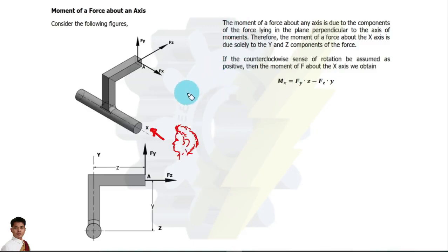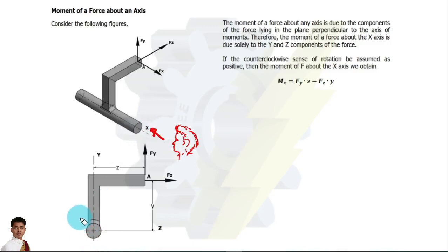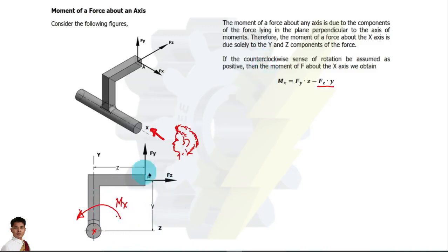Next subtopic: moment of force about an axis. The most basic thing to remember is where to place your line of sight. For example, if we are finding the moment about the x axis, we place our line of sight along the x axis and view the side view from that direction. We then assume moment direction, either clockwise or counterclockwise positive. For the moment about the x axis: Fz creates a clockwise moment so it is negative, and Fy creates a counterclockwise moment so it is positive. Fx has no moment about the x axis because it is parallel to that axis.